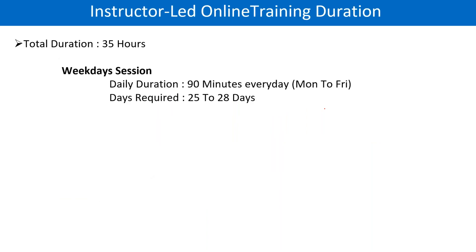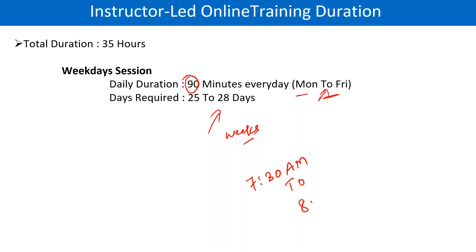Now let's discuss the duration of this training. This is going to be four weeks — one month to finish all the topics. We'll do Monday to Friday, daily 90 minutes. We are starting at 7:30 a.m. to 8:45 a.m. Some days we might go up to 9 a.m., but mostly we will finish within one hour 15 minutes, and some days up to one hour 30 minutes.